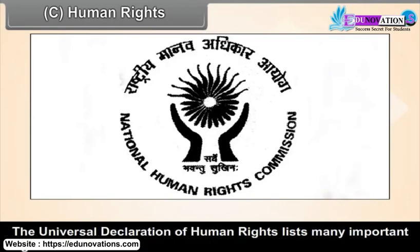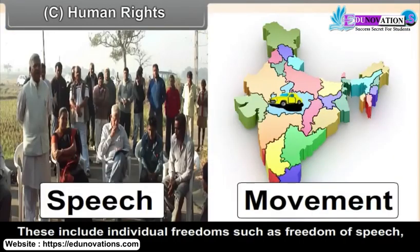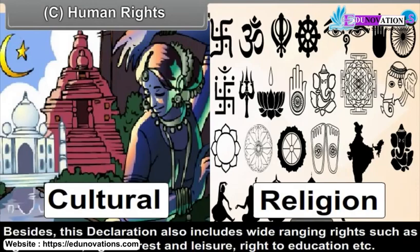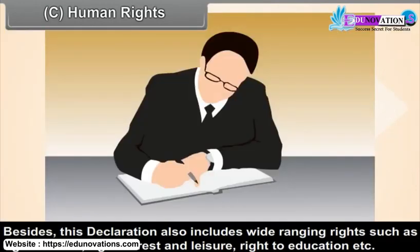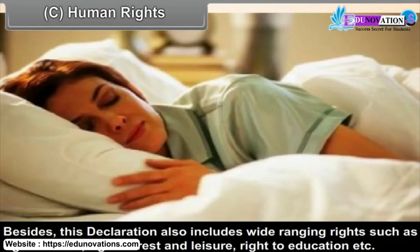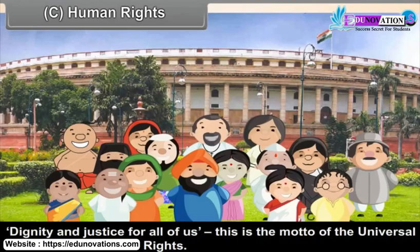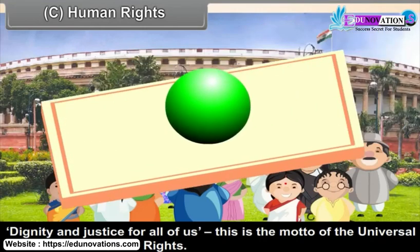The Universal Declaration of Human Rights lists many important rights. These include individual freedoms such as freedom of speech, movement, etc., right to equality, cultural rights, and freedom of religion. Besides this, the declaration also includes wide-ranging rights such as right to work, right to rest and leisure, and right to education. The purpose is to ensure a balanced development of every individual and ensuring equal worth of all persons. 'Dignity and justice for all of us' is the motto of the Universal Declaration of Human Rights.